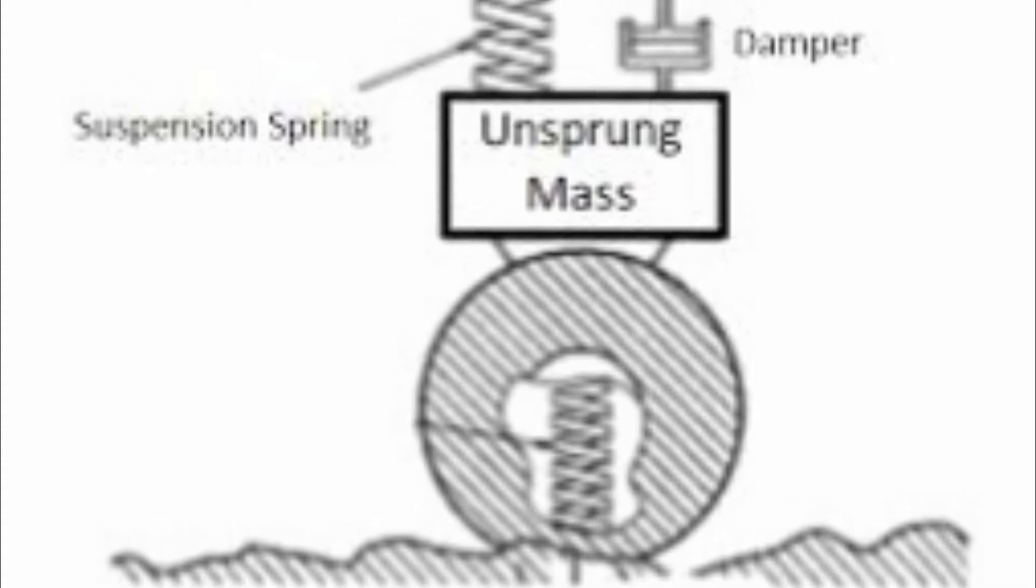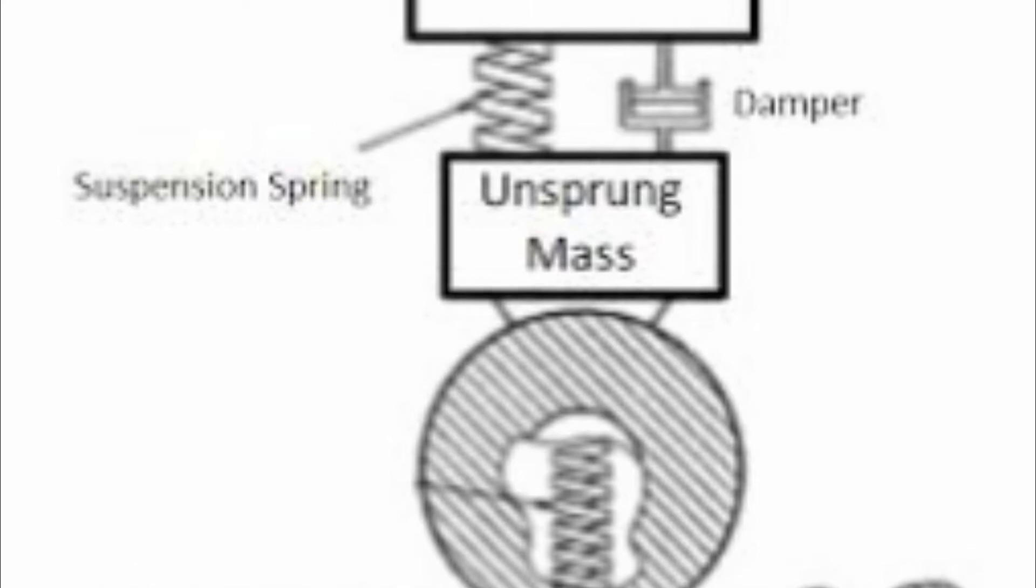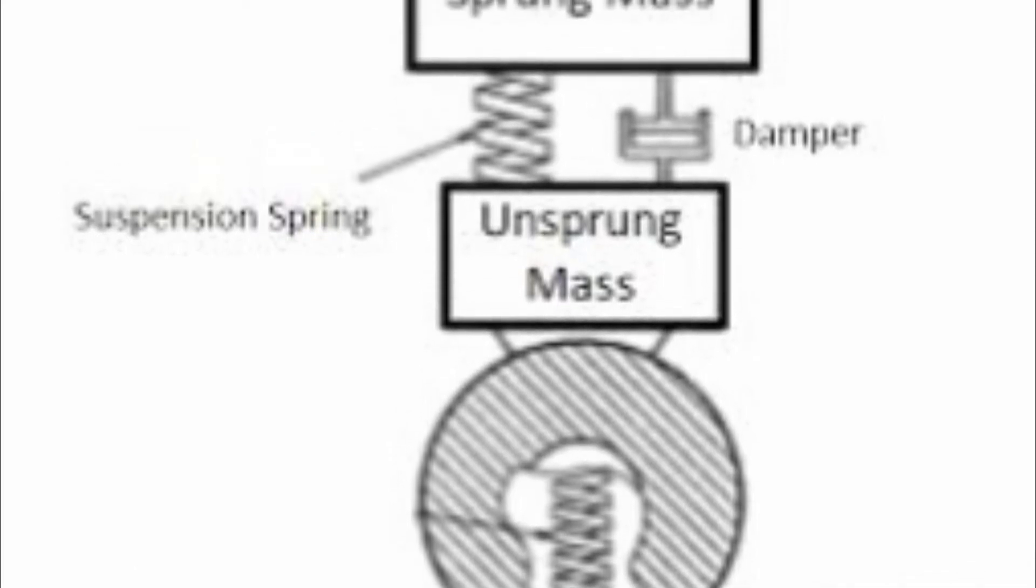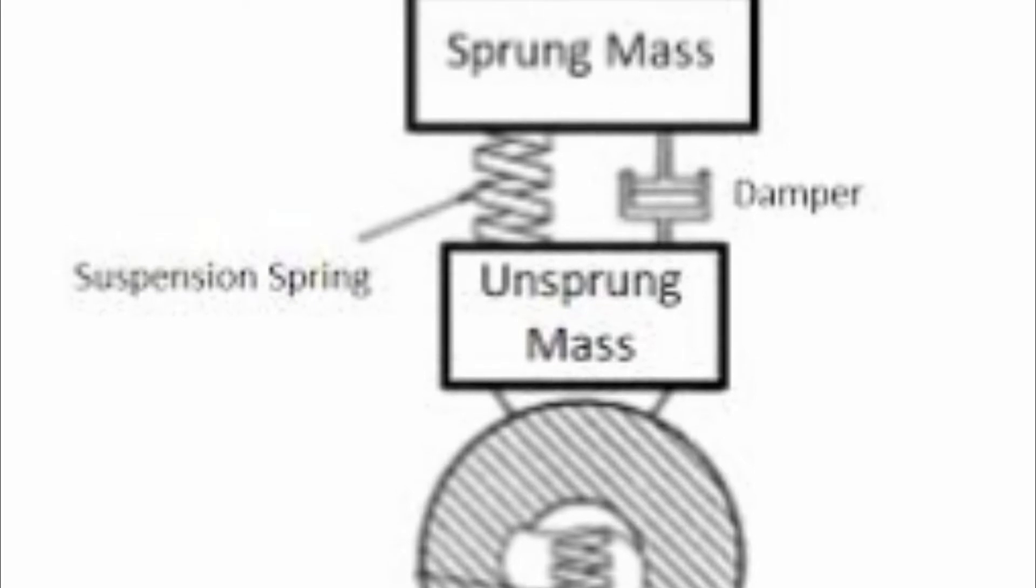In a ground vehicle with a suspension, the unsprung mass is the mass of the suspension, wheels or tracks, and other components directly connected to them, rather than supported by the suspension.